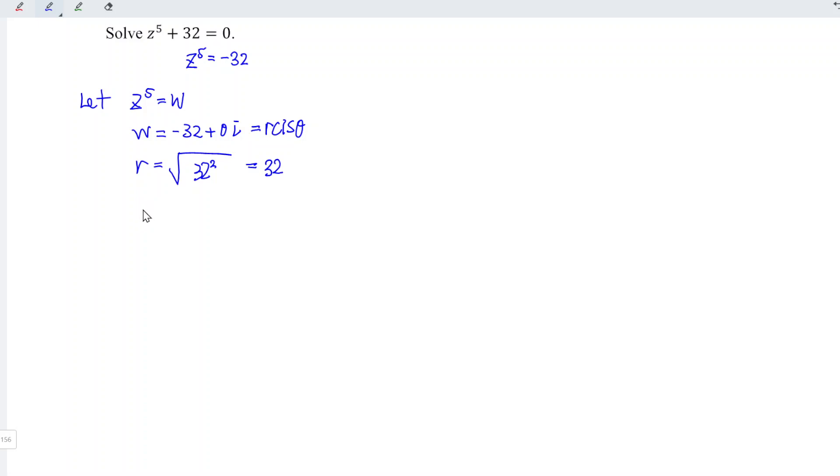Next, we should have theta, which is the argument. So we have inverse tangent of y divided by x. For this case, since y is 0 and x is negative 32, if we're lazy to calculate, we can use logic. What we have to do here is draw a Cartesian plane. What we have here refers to the real part. The real part is negative, and the imaginary part is 0.